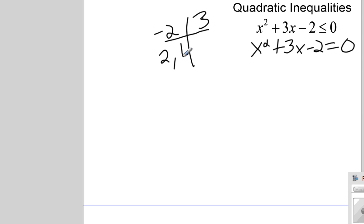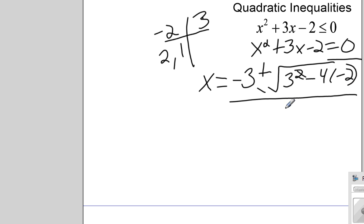I'm going to use the quadratic formula. x equals negative b plus or minus the square root of b squared minus 4ac all over 2a. Okay, let's simplify this.